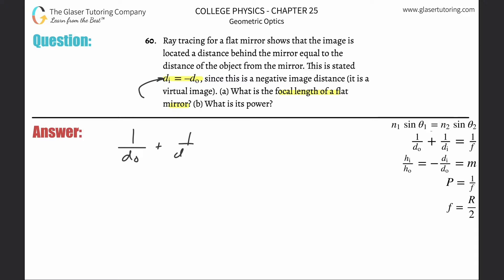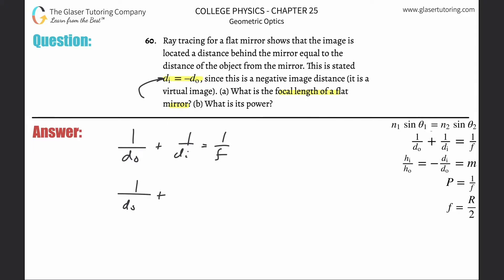So 1 over DO plus 1 over DI is equal to 1 over F. Now it's telling us that DI is equal to negative DO, so why don't we do that substitution — take negative DO and plug it in for DI. This would now be 1 over DO plus 1 over negative DO equals 1 over F. That negative down here is really over the whole fraction, so this really becomes a subtraction essentially.